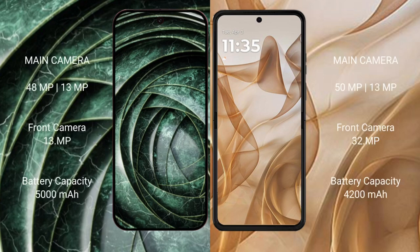The Google Pixel 9a features a rear dual camera setup with 48MP plus 13MP, and a front camera of 13MP. The Motorola Razr 50 also features a rear dual camera setup with 50MP plus 13MP, and a front camera of 32MP.